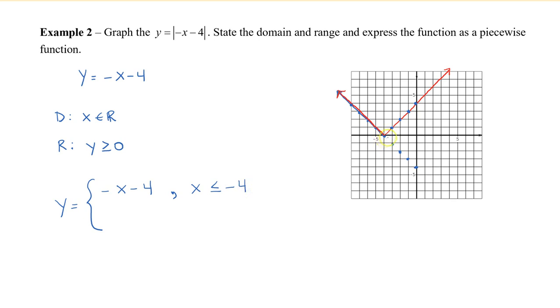Now the right piece, the second piece, this line here with a positive slope, that occurs when x is greater than negative 4. Now what we can do is we can read this from the graph, that we have a y-intercept of 4 and a slope of positive 1.